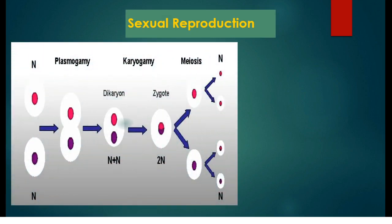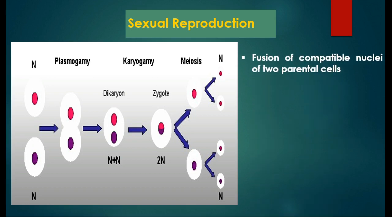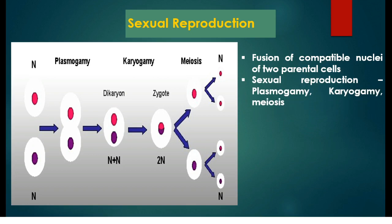In asexual reproduction there is no fusion of sex organelles or sex cells from two different organisms. In the case of sexual reproduction it is different — here there is fusion of compatible nuclei of two parental cells. In fungi, sexual reproduction follows the following steps: plasmogamy, karyogamy, followed by meiosis.